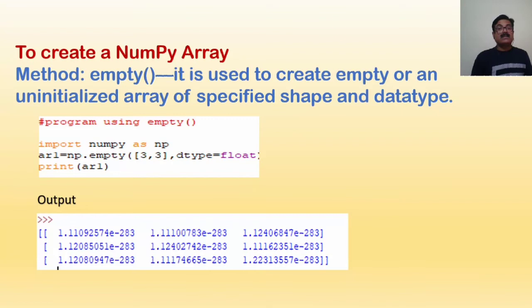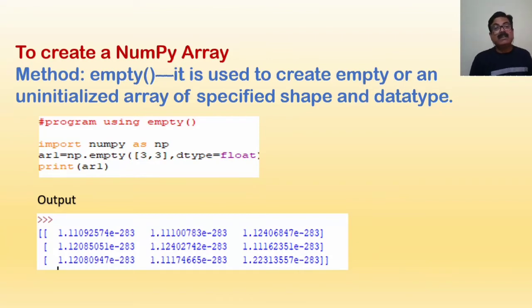You can see how to use the empty method. It is used to create an empty or uninitialized array of a specified shape and data type. For example: np.empty((3,3), dtype=float) — and the printing has been done for this. This method is used to create an uninitialized array.